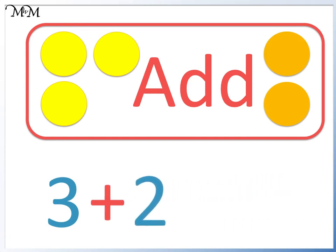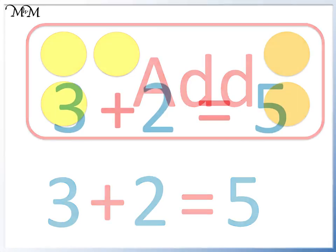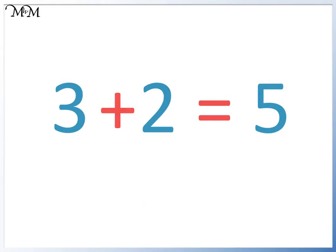All together we have one, two, three, four, five counters. To show that this is our total we write an equal sign. It means that three add two is the same value as five. This is an addition number sentence.